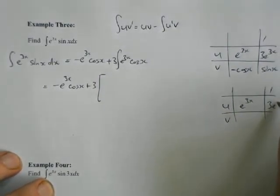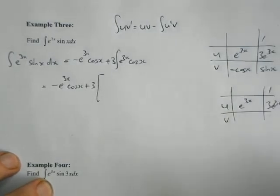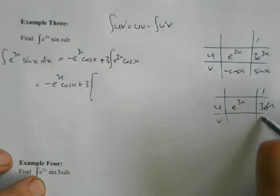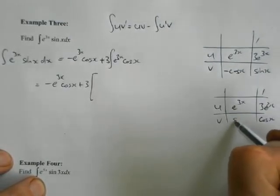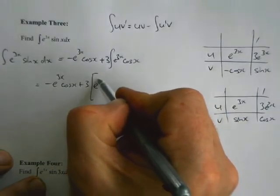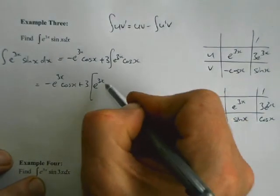We've got negative e to the 3x cos x plus three lots of something, and this something is going to be another integration by parts.